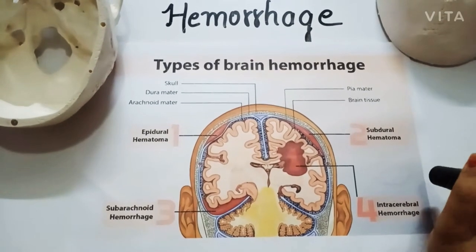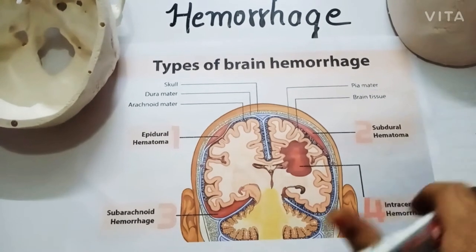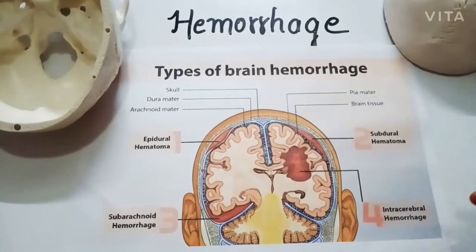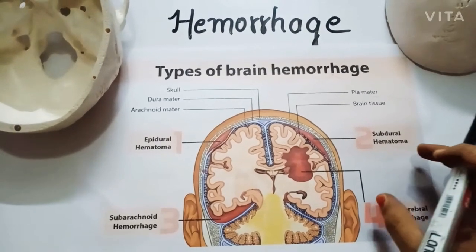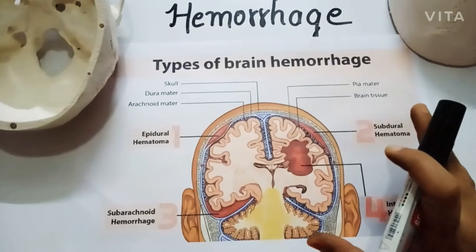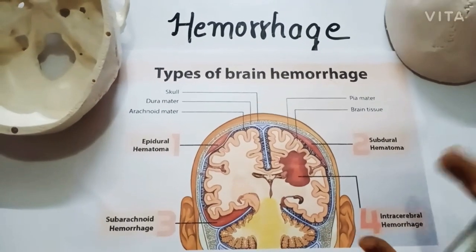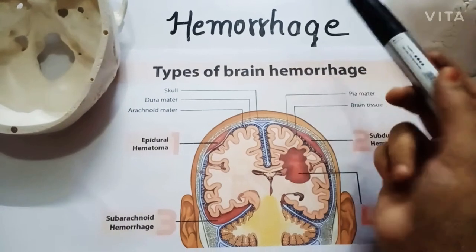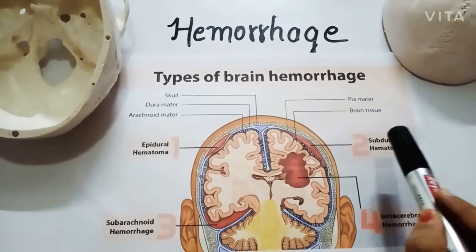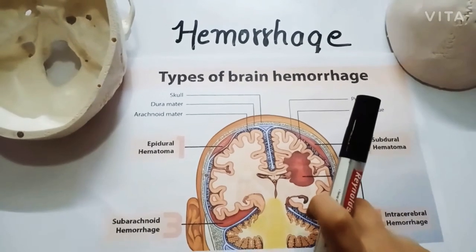We will study all four of these. Nothing is expected that you know prior to this — we are here to explain. One thing to notice is that some are called 'hemorrhage' and some are called 'hematoma.' So the question comes: are hematoma and hemorrhage the same thing?